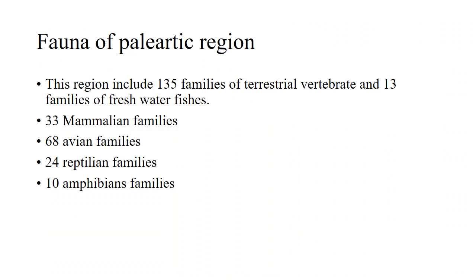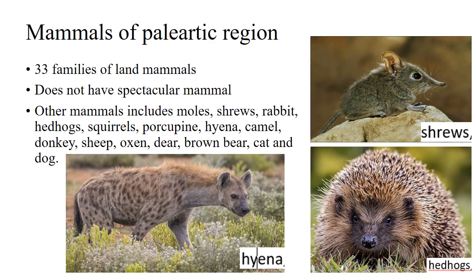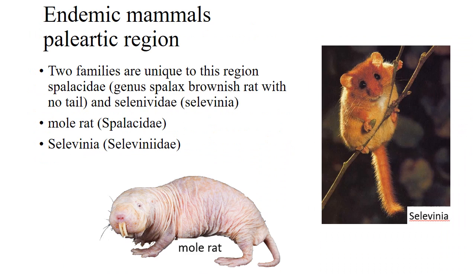The fauna of the Palearctic region includes 135 families of terrestrial vertebrates and 13 families of freshwater fishes. There are 33 mammalian families, 68 avian families, 24 reptilian families, and 10 amphibian families. The region does not have any spectacular endemic mammals. Common mammals include mole, shrew, rabbit, squirrels, porcupine, hyena, camel, donkey, sheep, deer, brown ox, cat, and dog. Two families unique to this region are Spalacidae and Seleviniidae, represented by the mole rat and Selevinia.